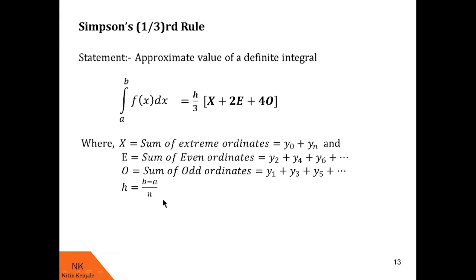This h is the step size of the sub-intervals of interval [a, b]. Note that y₀ and yₙ will not occur in E as well as O. Now let us see examples on Simpson's one-third rule.